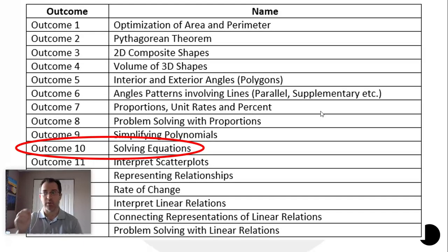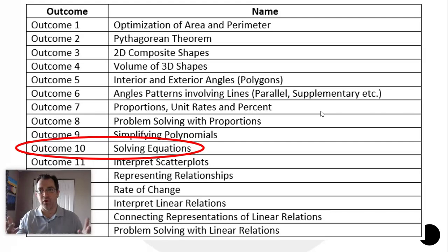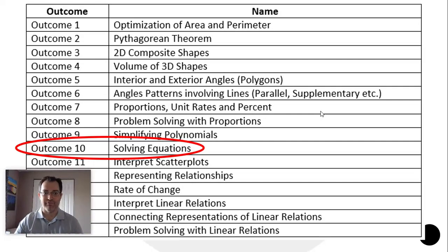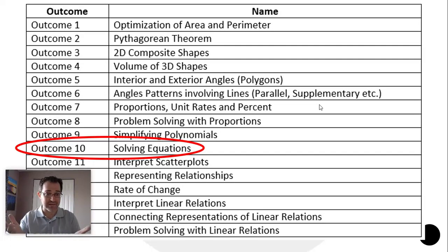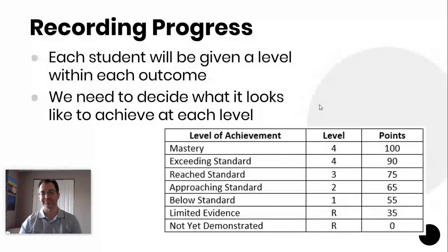Think about what a level 1 would be — what does it look like to have just met expectations, to just barely reach that threshold where we're saying that's successful enough? That's not our goal; we're hoping for great success. But it's important to have in our heads what level 1 means. And then a tough one: what does it mean to be level 4 — to have mastered solving equations at a grade 9 level? We're not talking about solving a quadratic or a really fancy equation from grade 10 or 11; this is a grade 9 course.